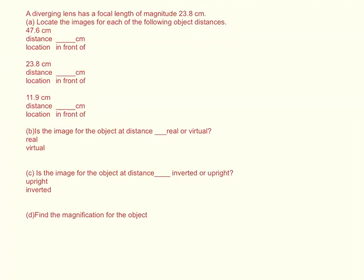A diverging lens has a focal length of magnitude 23.8 cm. Locate the images of each of the following object distances. Part A: locate the image Q. Part B: for each of these distances, is the image real or virtual? Part C: for each of the distances, are they inverted or upright? And Part D: what are the magnifications at each of the distances?